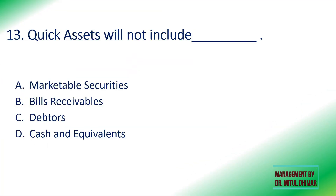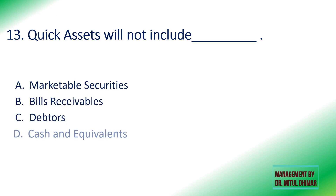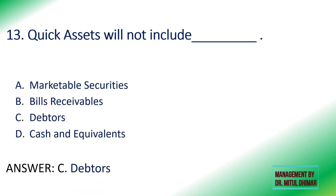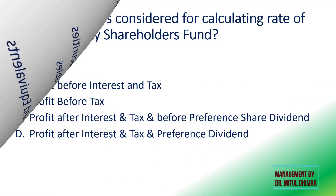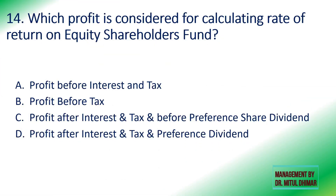Thirteenth: which will NOT be included in quick assets — marketable securities, bills receivables, debtors, or cash and equivalents? The answer is debtors, as debtors are not quickly convertible into cash.